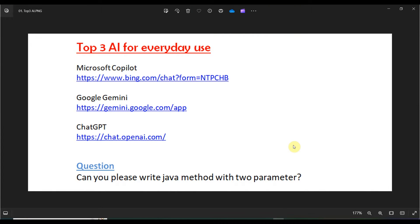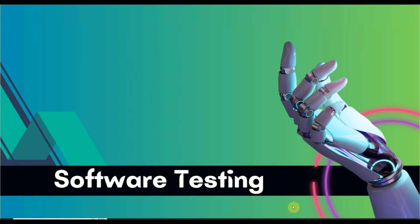The first one is Microsoft Copilot — you go to bing.com and chat with it. The second is Google Gemini, which was before known as Google Bard. The third is ChatGPT, which is a product of OpenAI. Every AI has a pro version, but I will use the basic free version. I will ask all three the same question: can you please write a Java method with two parameters.